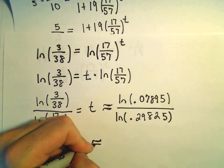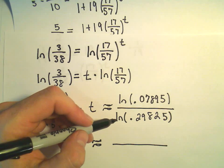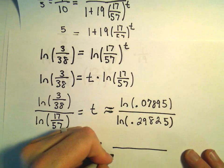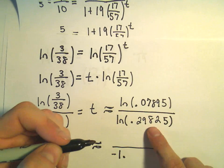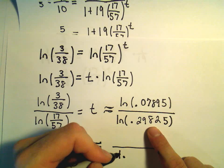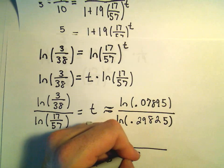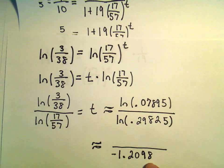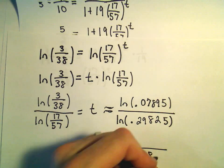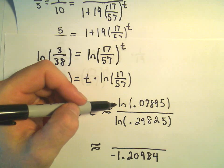Again, I guess we're really approximating here. I'm going to go ahead and take the natural logarithm of this bottom number because it's on my screen. So if I take the natural logarithm of this, I'm getting negative 1.2098. Again, I'm going to round up to 4.